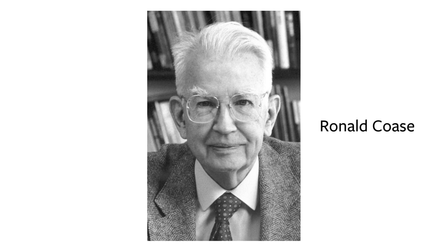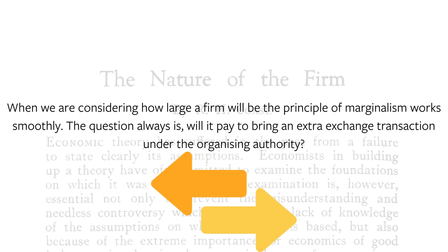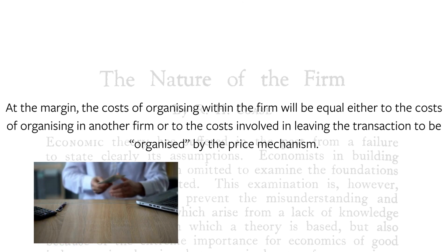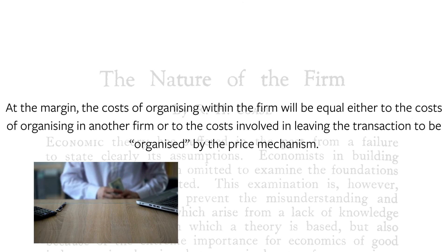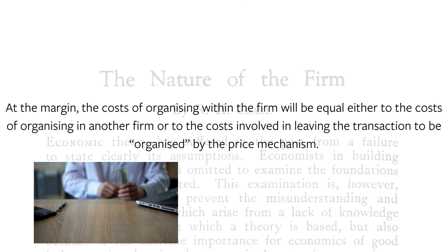One of the earliest economists to explore the question of integration versus modularization was Ronald Coase in his seminal paper, The Nature of the Firm. Coase concluded: when we are considering how large a firm will be, the principle of marginalism works smoothly. The question always is, will it pay to bring an extra exchange transaction under the organizing authority? At the margin, the cost of organizing within the firm will be equal either to the cost of organizing in another firm, or to the cost involved in leaving the transaction to be organized by the price mechanism.